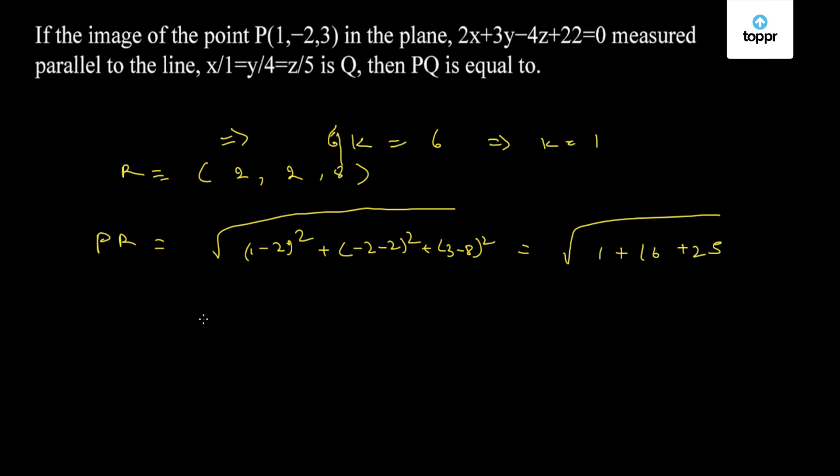So this comes out to be equal to √42 units. So PQ is equal to twice PR is equal to 2√42 units. Thank you.